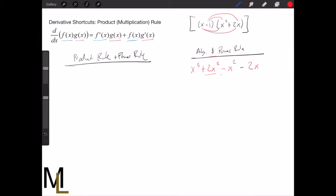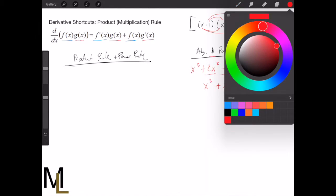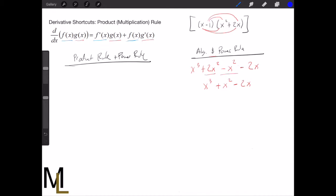We can simplify these terms into just x². So we get x³ + x² - 2x. And then let's go ahead and take the derivative of this, so I'm going to use the d/dx format.